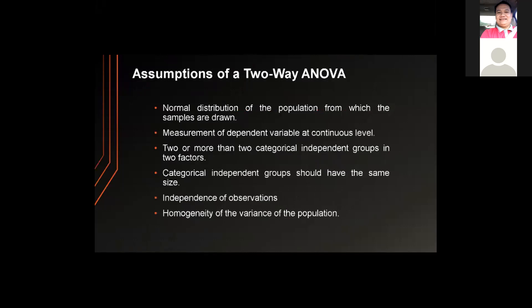Further assumptions of two-way ANOVA: measurement of the dependent variable at continuous level; two or more categorical independent groups in two factors; categorical independent groups should have the same size; independence of observations; and homogeneity of the variance of the population.